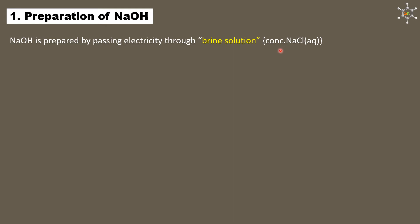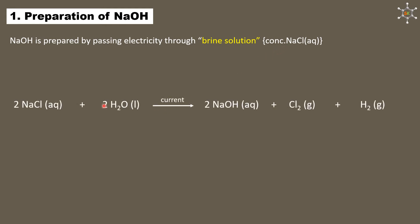When current is passed through sodium chloride solution in water, we get sodium hydroxide as a product. Since sodium hydroxide is soluble in water, it is also called an alkali. Along with sodium hydroxide, chlorine gas and hydrogen gas are obtained as byproducts.